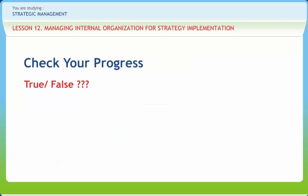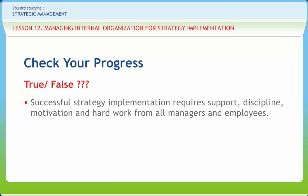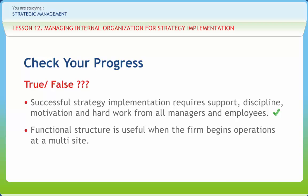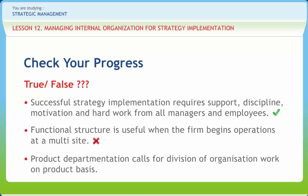Let us check if we have understood the various concepts discussed in this lesson. Successful strategy implementation requires support, discipline, motivation and hard work from all managers and employees — Right. Functional structure is useful when the firm begins operations at a multi-site — Wrong. Product departmentation calls for division of organization work on a product basis — Right.